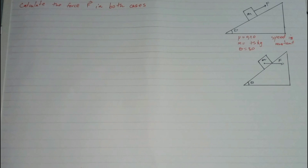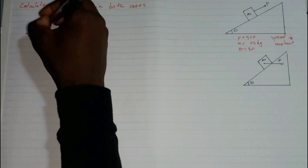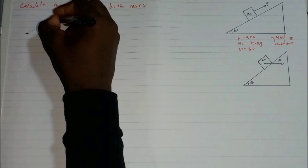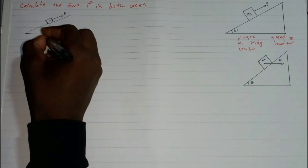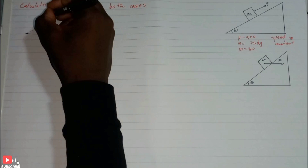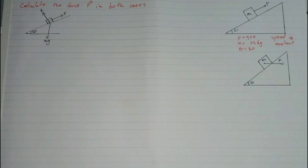First of all, I'm going to draw a free body diagram. So we have a mass here on the slope, and we have F which is going up the slope. The weight acts downward. Weight is equal to mg, and we have the normal force which I'll call R. This angle here is 30 degrees.